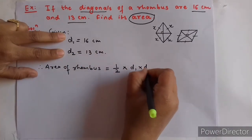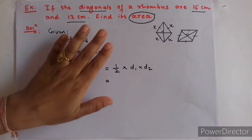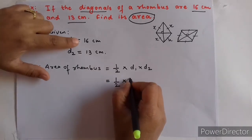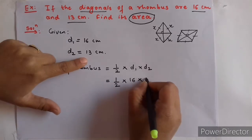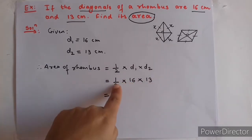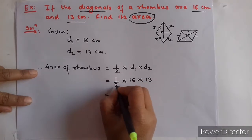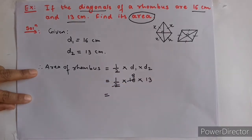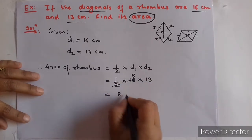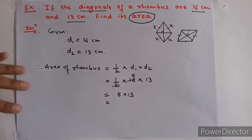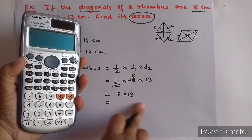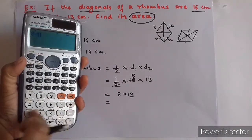So area = half into D1 into D2 = half into 16 into 13. You can put this in a calculator or cancel here. The 2 and 16 cancel, leaving 8. So we get 8 into 13. You can write this directly or use a calculator as we do in exams.